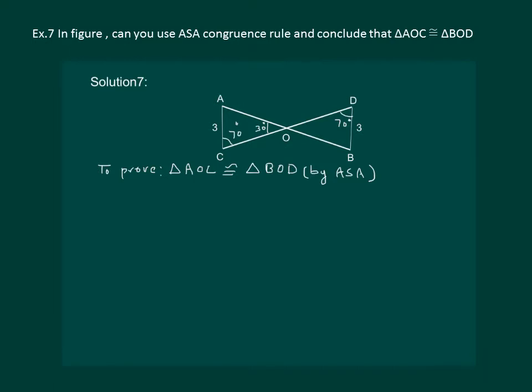We have to prove that triangle AOC and triangle BOD are congruent by ASA property. First thing that we can see is that angle COA is equal to angle BOD as they are vertically opposite angles.